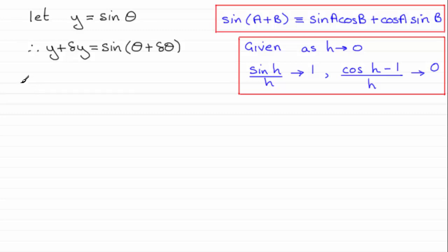Next what I'm going to do is subtract y from both sides, so therefore we have delta y equals the sine then of all of theta plus delta theta minus y.